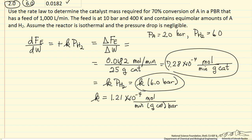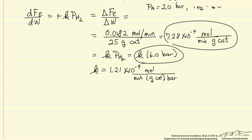Notice the units of the rate constant must be consistent with the rate expression — in terms of grams of catalyst, bar, and moles, because our molar flow rate is calculated from the mass balance in moles per minute. Now we're going to use this rate constant to model the larger reactor.